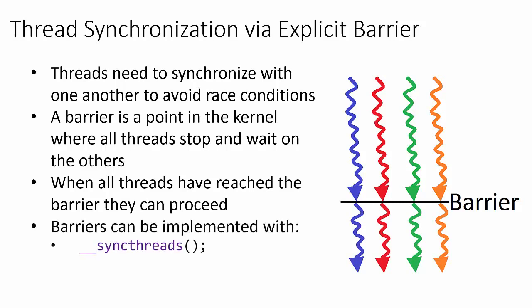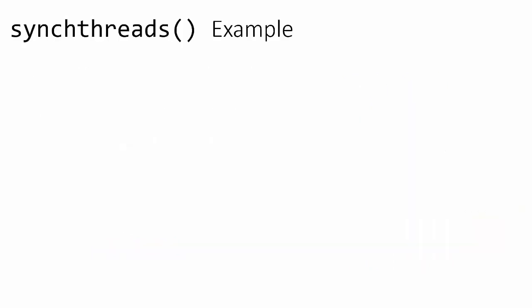We can explicitly implement a barrier by using the sync threads keyword. So let's take a look at an example of how to use thread synchronization.